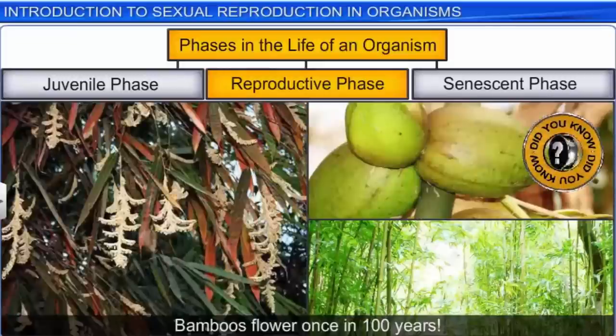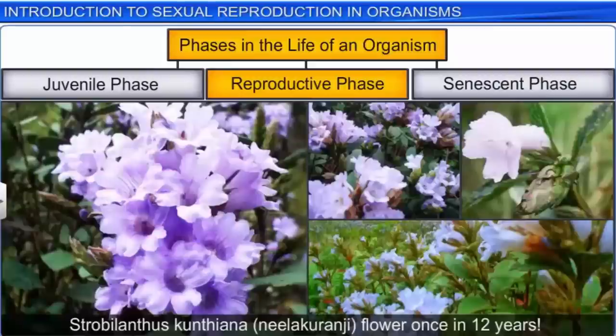Did you know that certain plants such as bamboo flower only once in a hundred years, produce fruits and then die? Similarly, Strobilanthus kunthiana or neelakurinji flowers every 12 years.